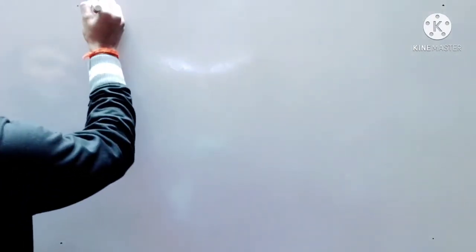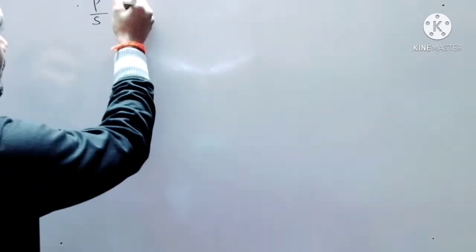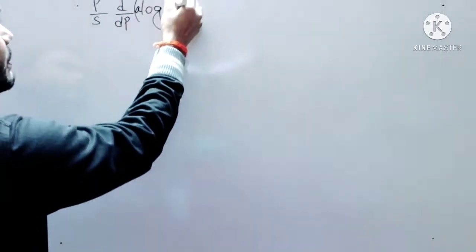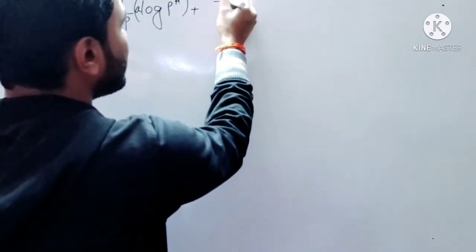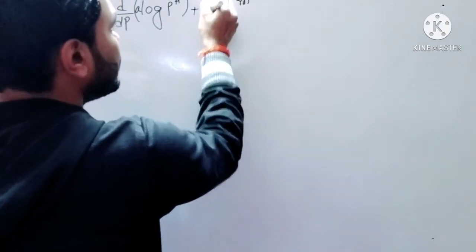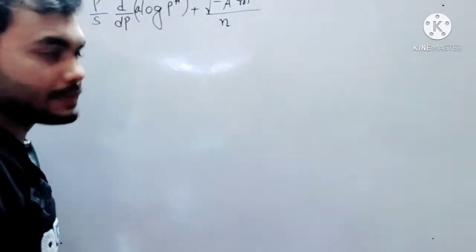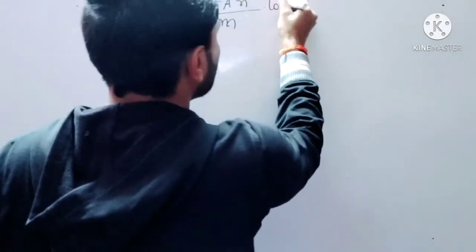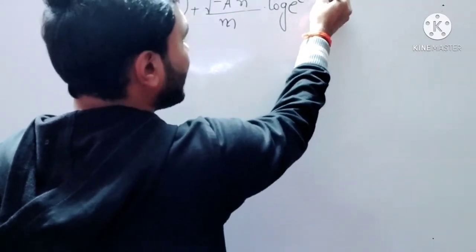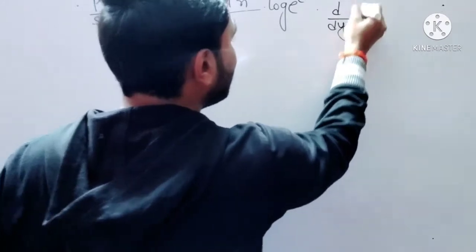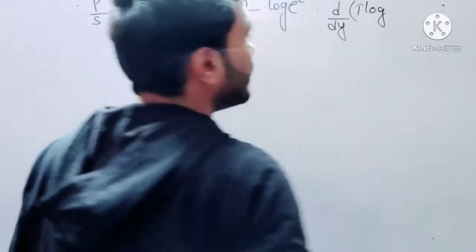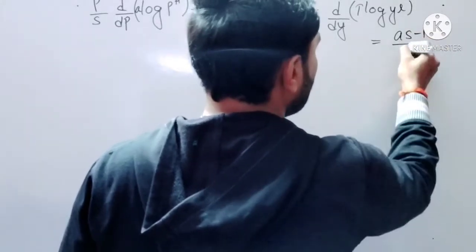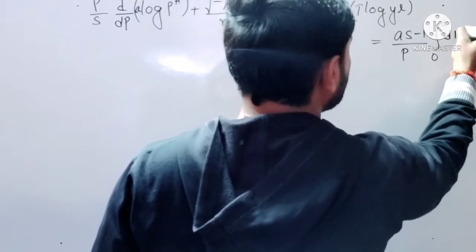So first I'm writing the equation: p squared over s, into d/dp of log of a into log of p to the power h, then plus or minus a squared n squared, whole over root of n, into log of e to the power (e to the power n plus 1), into d/dy of t log y to the power l, equals a times s to the power minus 1 over p, integration from 0 to small b of d(d).